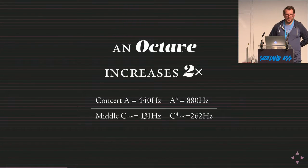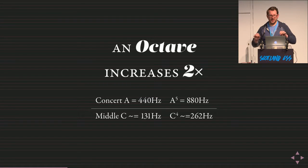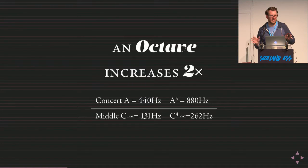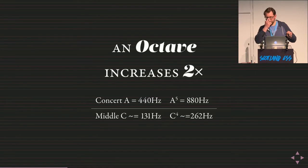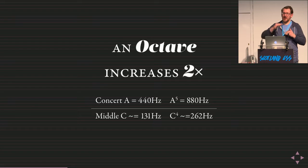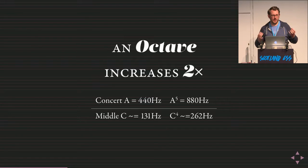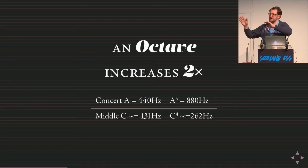An orchestra will typically tune to what's called the concert A, most often measured at 440 hertz — a precise and nearly universal standard. If we move that A up an octave, say from tuning the clarinets to the flutes, what happens mathematically is the frequency literally doubles, from 440 hertz up to 880.